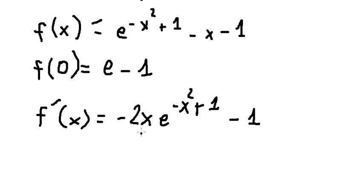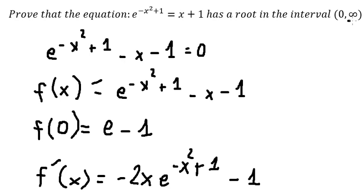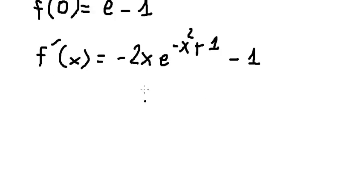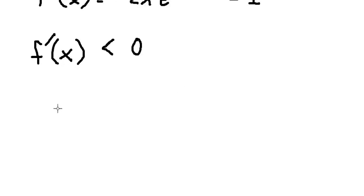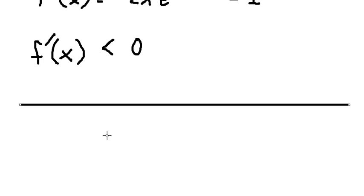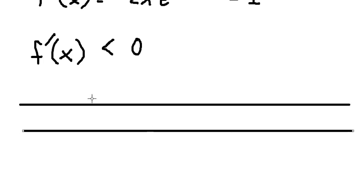On the interval from zero to positive infinity, if we put zero in here this expression equals negative one, and as s approaches positive infinity it still goes to negative one. That means the first derivative is always negative. Now we can draw the variation table.